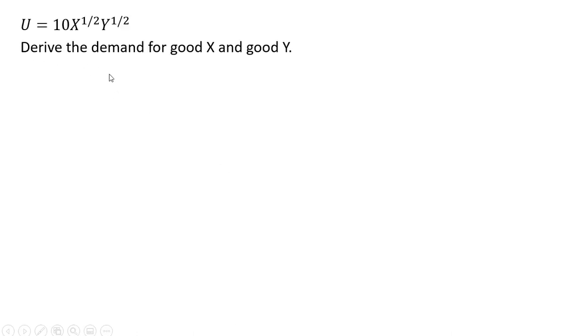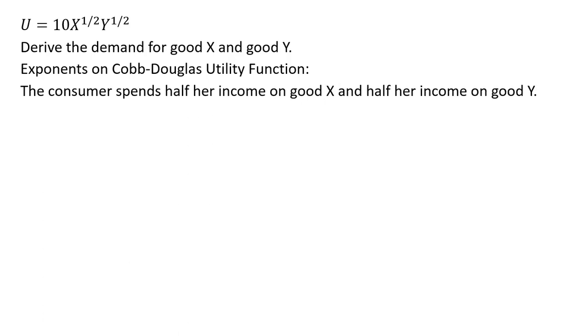So, rewriting our utility function, what we want to do first is derive the demand for Good X and Good Y. Since we're using a Cobb-Douglas utility function, we can use the exponents to quickly derive the consumer's demand. Because of these exponents, the consumer spends half her income on Good X and half her income on Good Y. Half the income spent on Good X is 0.5M, and the spending on Good X is the price of Good X times units of Good X. If we solve this equation for X, you have the ordinary demand for Good X.